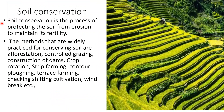Soil conservation is the process of protecting the soil from erosion to maintain its fertility. The methods widely practiced for conserving soil are: afforestation — that is, growing more trees and planting more plants — controlled grazing, construction of dams, crop rotation, strip farming, contour ploughing, terrace farming, checking shifting cultivation and windbreaks.